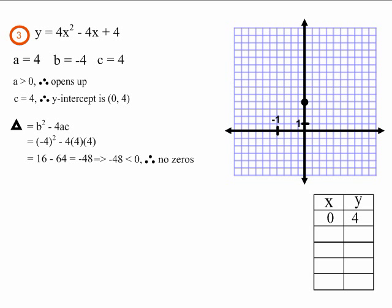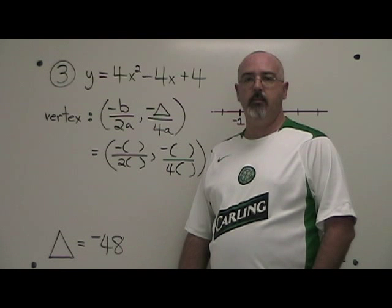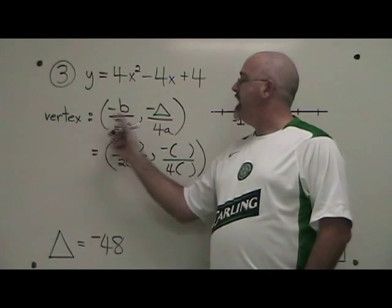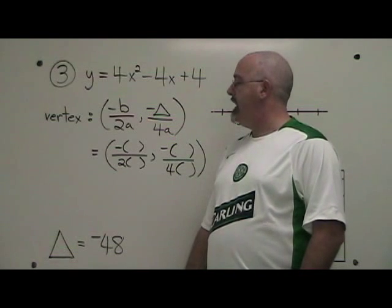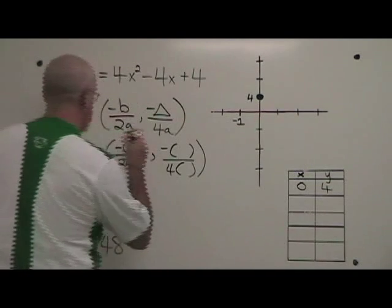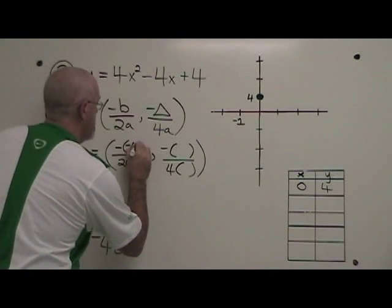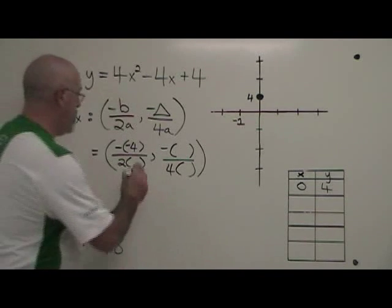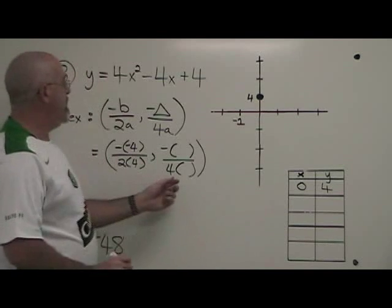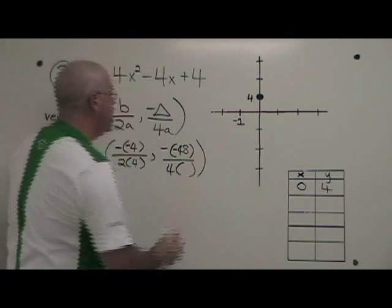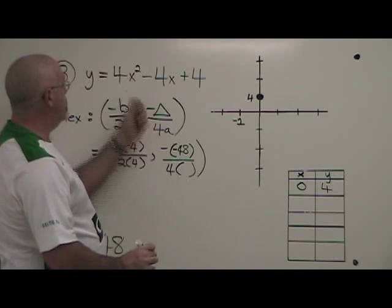This is what example 3 looks like before finding the vertex. To find the vertex for example 3, we use the vertex formula: negative b over 2a, and negative delta over 4a. Filling in the values, our b is negative 4, so it's negative of negative 4, over 2a, which is 2 times 4. Our delta is negative 48, so we have negative of negative 48 over 4a, which is 4 times 4.